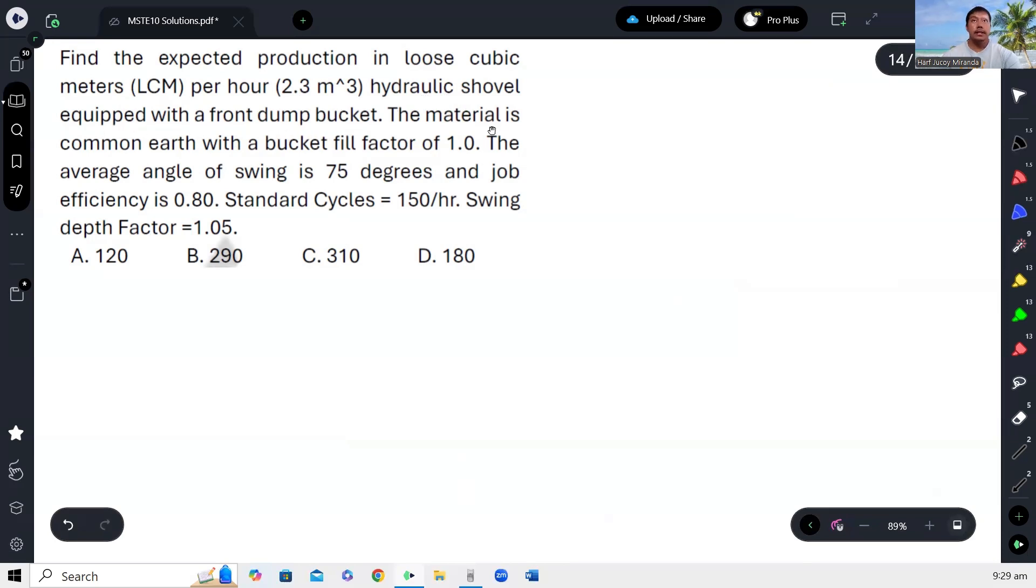The material is common earth with a bucket fill factor of 1. The average angle of swing is 75 degrees and job efficiency is 0.8. Standard cycles is equal to 150 per hour. Swing depth factor is 1.05.